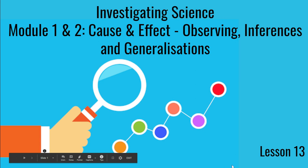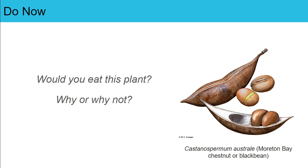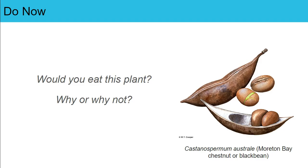Welcome to lesson 13 of module 1 and 2 for investigating science. In this lesson we're going to be looking at the inquiry question: what inferences can be drawn from observations? We're going to be focusing on Aboriginal and Torres Strait Islander people. Take a minute now to answer the do now: would you eat this plant? Why or why not? Pause the video now until you've answered that question.